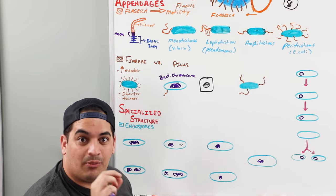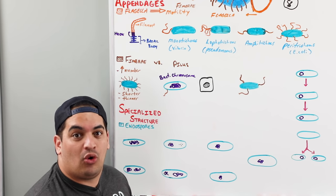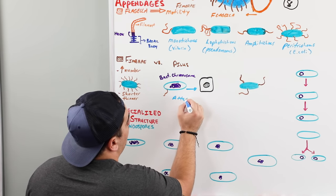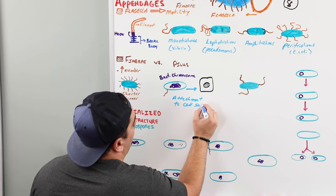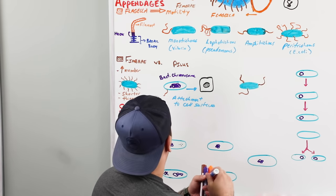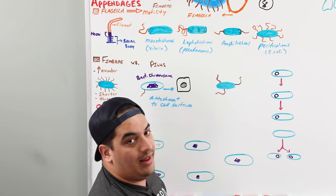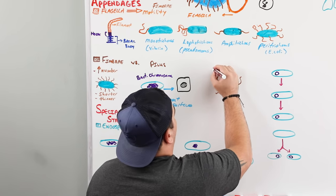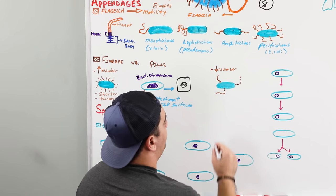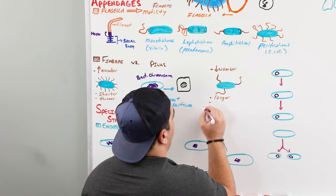The function of fimbriae is to allow for attachment or adherence to different types of cell surfaces. In contrast, pili are fewer in number, longer, and thicker. The proteins forming pili come from the plasmid - genes on the plasmid are transcribed and translated to make the proteins that form the pilus.